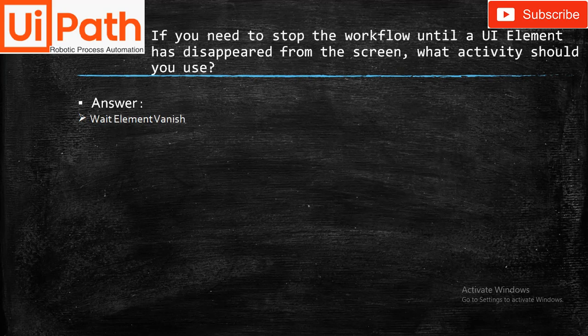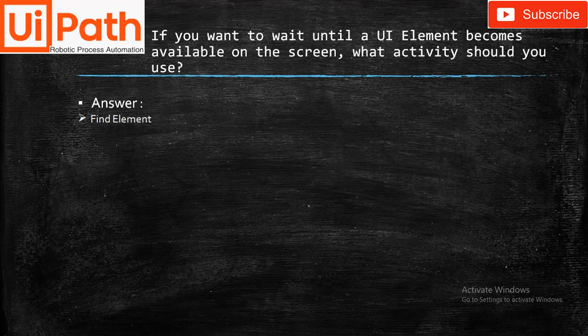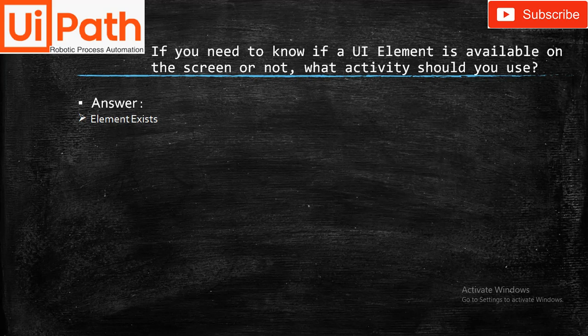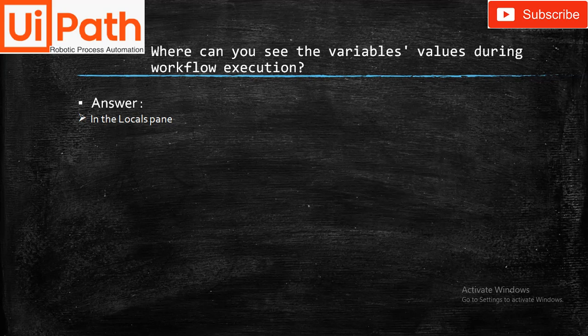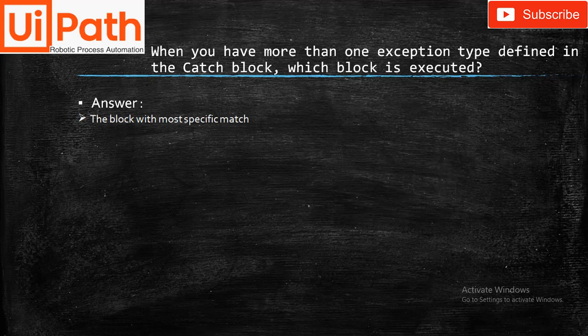If you need to stop the workflow until a UI element disappears, use Element Vanishes. If you want to wait until a UI element becomes available, use Find Element. To check if a UI element is available or not, use the appropriate activity. Where can you see variable values during workflow execution? In the Locals panel.